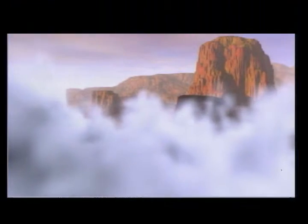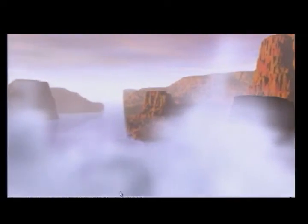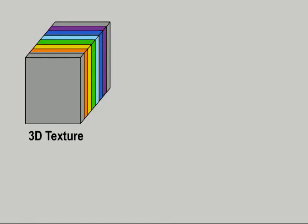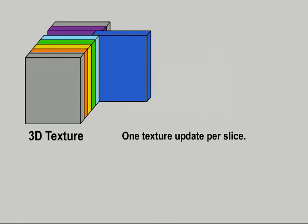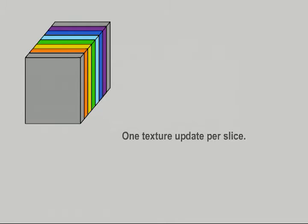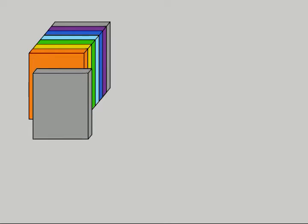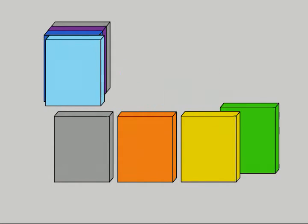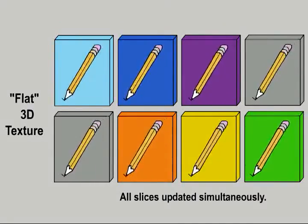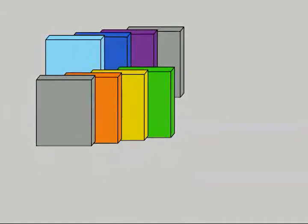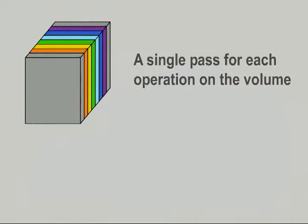Extending our 2D simulation to 3D on the GPU requires an efficient method for updating volumetric data. Previous methods stored the volumetric data in 3D textures and updated the data slice by slice, requiring either a slow context switch or a texture copy for each slice update. To avoid this, we tile the volume slices onto a single 2D texture, allowing us to perform a complete 3D simulation step in one rendering pass, avoiding extra rendering and copy passes for significant savings on current hardware.